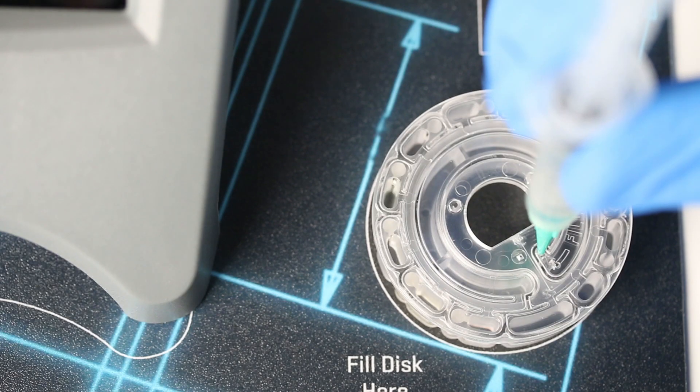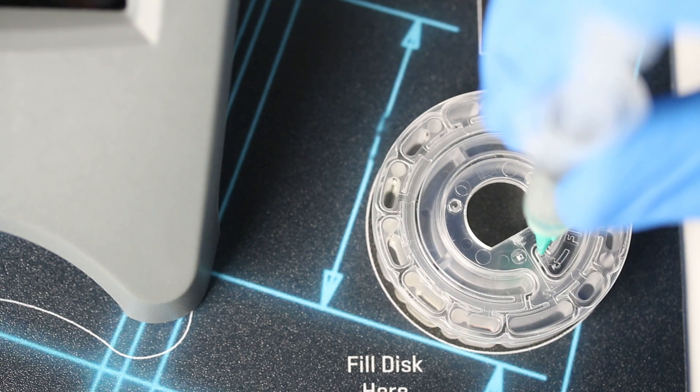Fill the disk using slow, even pressure. The sample will fill the spaces between the baffles in a counterclockwise order. Each space will fill from the bottom to the top.